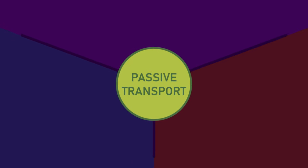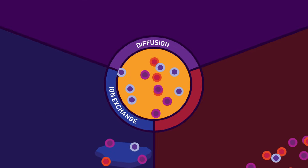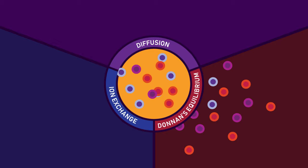The passive process transport or absorption can be explained by diffusion theory, the ion exchange theory, and Donnan's equilibrium.